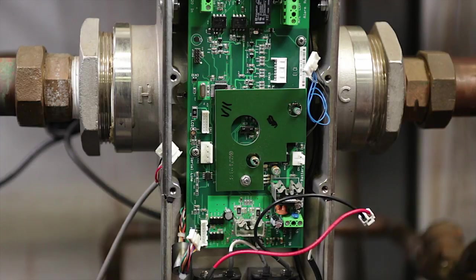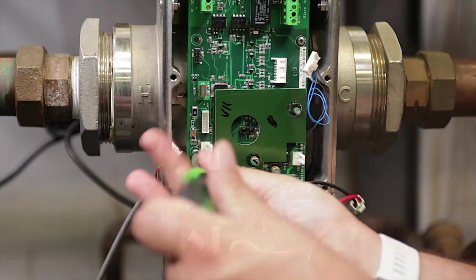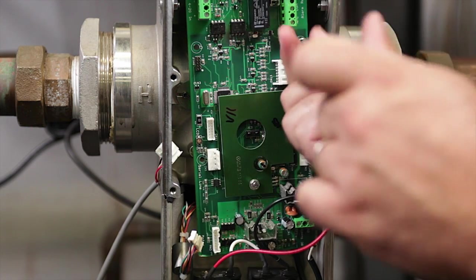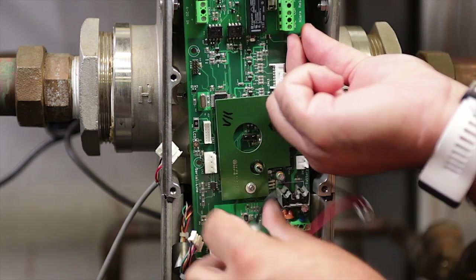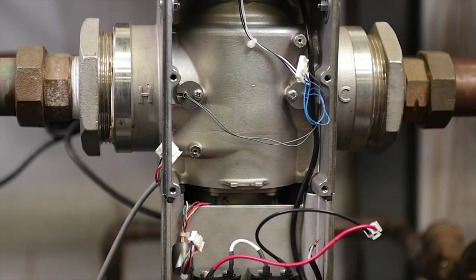With all electrical connectors removed from the PCB, remove the two retaining screws, then remove and return the original PCB to the Armstrong Hot Water Group. Keep the two retaining screws, as they will be used later.